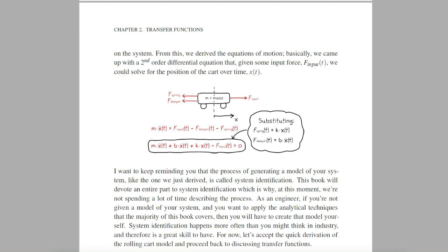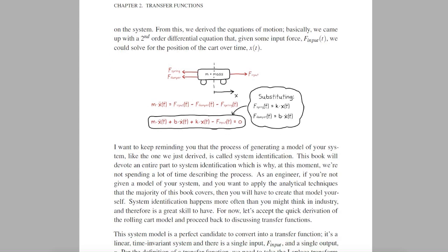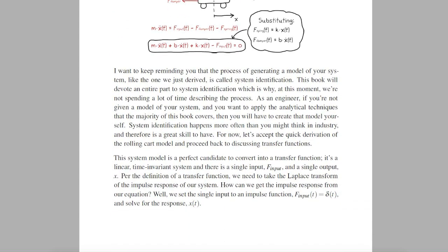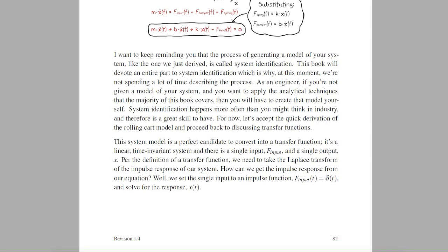The process of generating a system model is called system identification. Summing the forces on a system is just one way to create a model, there are many others that you will be exposed to as a control engineer, so we'll cover it in detail in future chapters. For now though, let's just accept this model and continue on with transfer functions. This system model is perfect to represent as a transfer function.